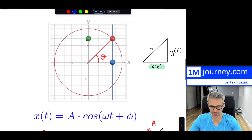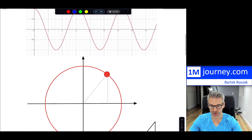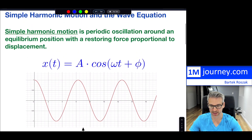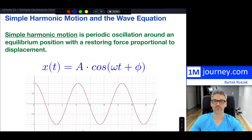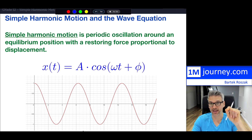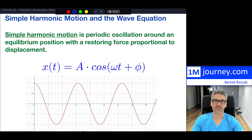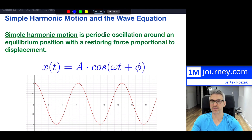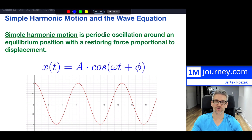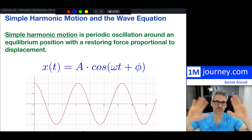So that brings us to the end. I hope now you can relate it back and understand where the wave equation comes from: A stands for amplitude, omega stands for angular velocity — the angle and how quickly it's changing — and phi is your starting position when t equals zero, known as the phase angle. That is it for this video. Thank you for watching — we'll see you in a future one. Bye, everybody.